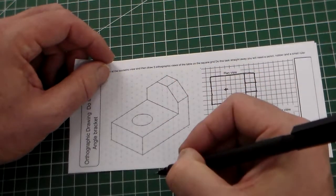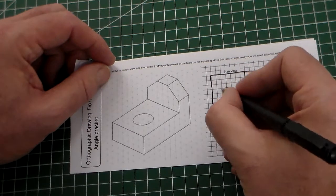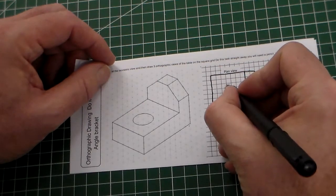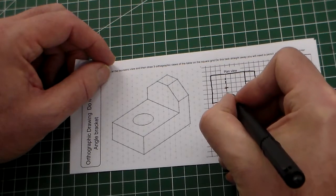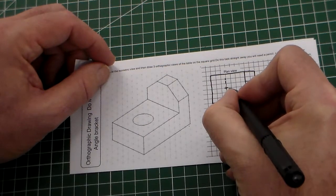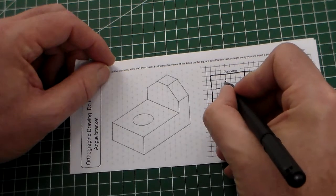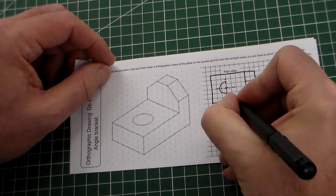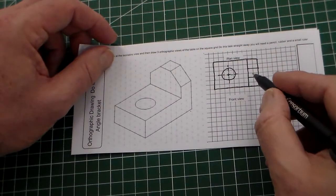Then for the circle, this is a circular hole which goes through the bracket. From the plan view, that would just be a circle, but with a circle we can use a dash and a dot to mark the center of the circle, then we can draw a circle on. So there's our plan view.